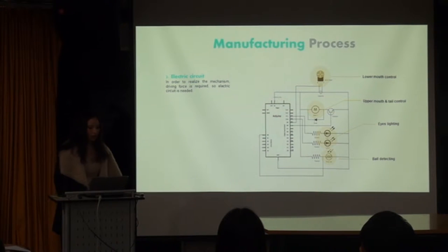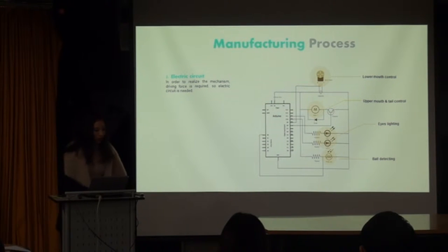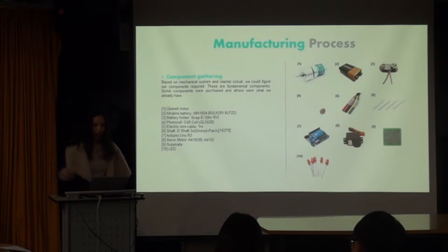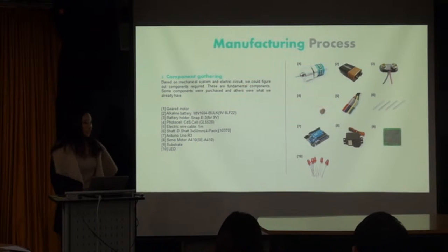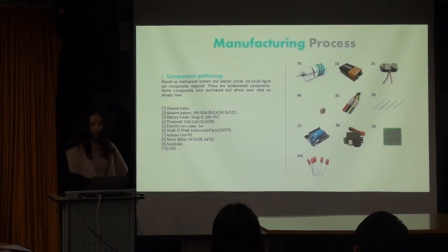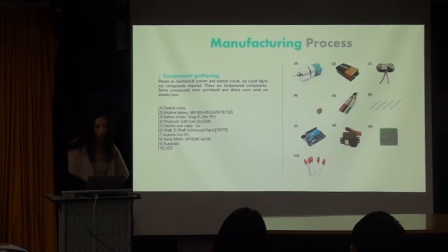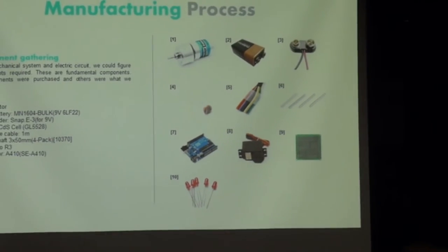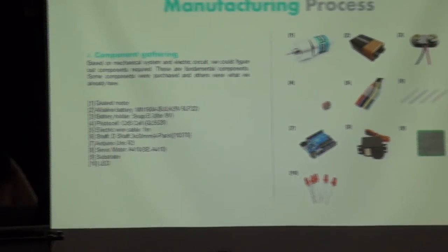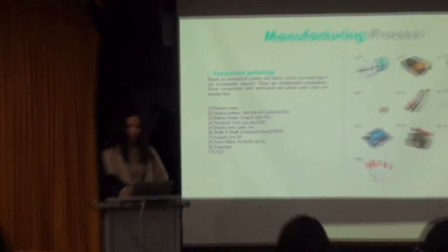The resulting mechanisms are attached to the character and then connected to each other via gear trains. In order to realize the mechanism, a driving force is required, so an electric circuit is needed. Based on the mechanical system and electric circuit, we could figure out the components required. These are the fundamental components — some were purchased, and others were ones we already had.